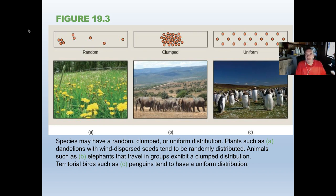A couple of factors related to populations that are important when counting them: distribution — how they're spaced across a landscape. There are only three ways living things can be spaced across a landscape. The first is random distribution — imagine grabbing a handful of seeds, throwing them in the air, and they fall to the ground randomly. Many plants have random distributions because small seeds get blown by the wind and land wherever the wind drops them.